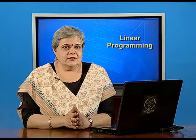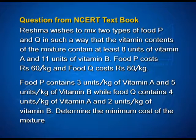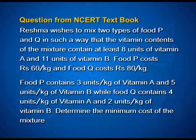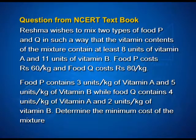Our first question is from the NCERT textbook, page 519. The problem states that Reshma wishes to mix two types of food P and Q in such a way that the vitamin content of the mixture contains at least 8 units of vitamin A and 11 units of vitamin B. Food P costs rupees 60 per kg, food Q costs rupees 80 per kg. Food P contains 3 units per kg of vitamin A and 5 units per kg of vitamin B, while food Q contains 4 units per kg of vitamin A and 2 units per kg of vitamin B. We have to find the minimum cost of the mixture.